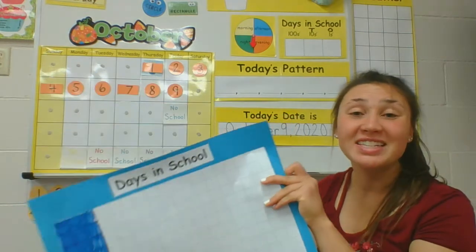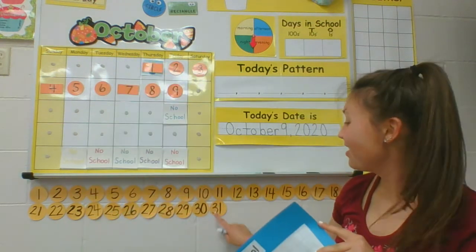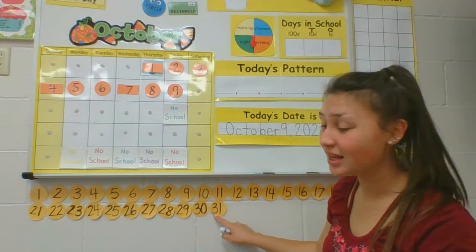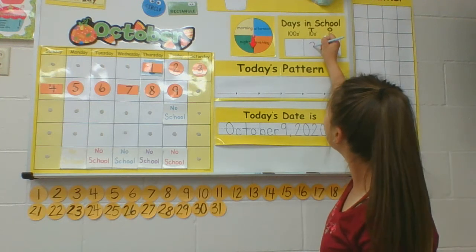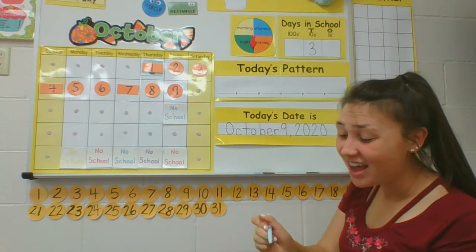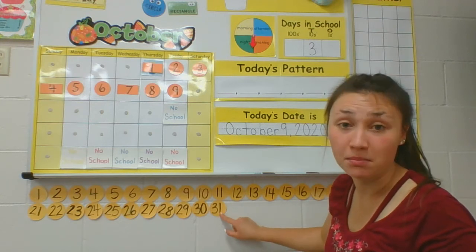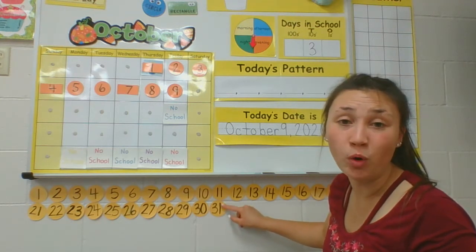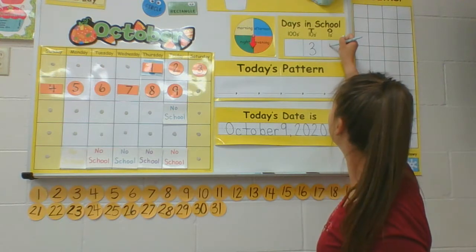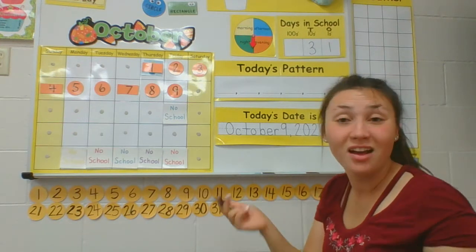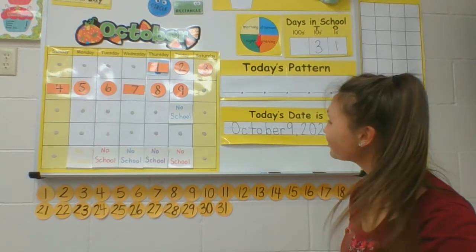How many tens are there in 31? Yeah, three tens in 31. So I'm going to write that up here in our tens and ones chart — halfway around and around again for a three. And how many ones in 31? It can help you to look at the ones place. Yeah, one — and one in 31. So that's where you put the one. The O is the first letter in one, so we put it there.